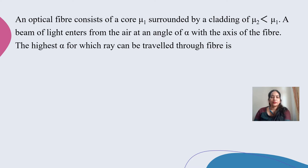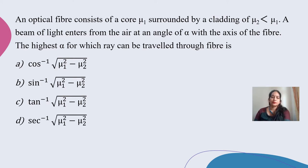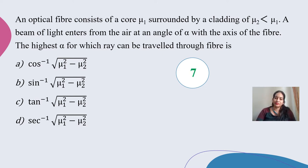First question: An optical fiber consists of a core of refractive index mu1 surrounded by cladding of mu2, where mu2 is less than mu1. A beam of light enters from air at an angle alpha with the axis of the fiber. The highest alpha for which the ray can travel through the fiber is — options include cos inverse, sin inverse, and tan inverse of square root of (mu1 squared minus mu2 squared). The correct answer is option B: sin inverse of square root of (mu1 squared minus mu2 squared).